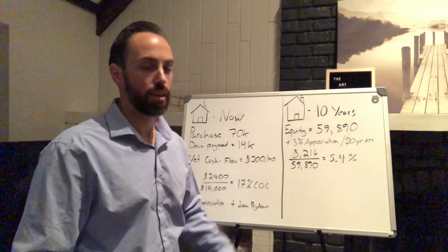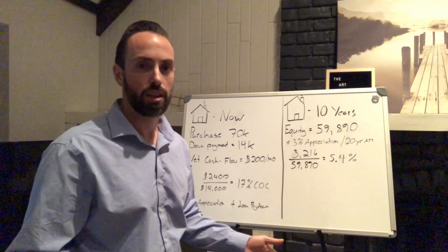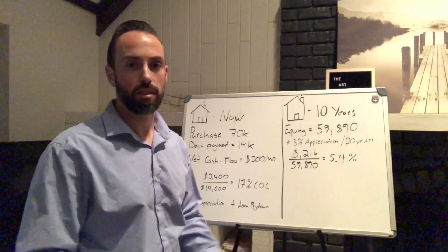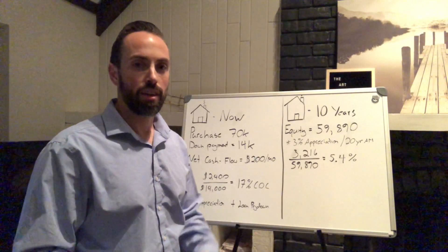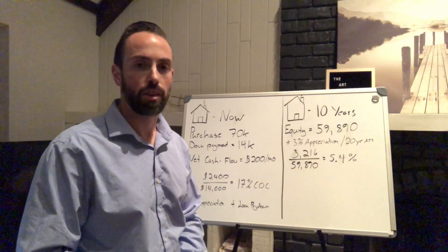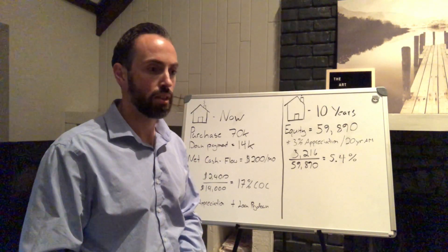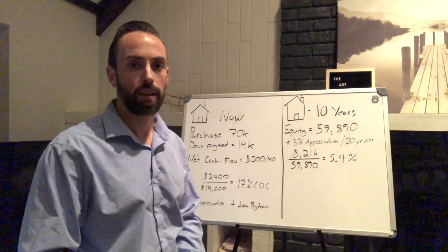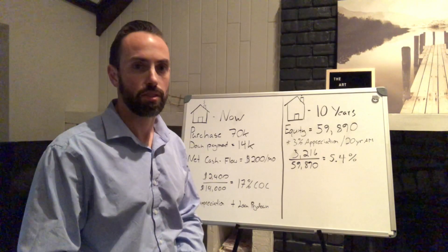At least do that until you get to the number of units you want. If your goal is a certain amount of cash flow per month and you need, say, 40 units to get there — once you hit that 40-unit number, then it might make sense to start paying loans down. But until you reach that number, use leverage as much as possible, obviously within reason. Make sure you have plenty of margin on your cash flow so that you're in a safe position.